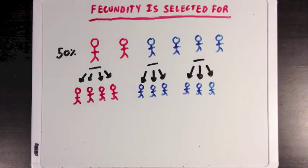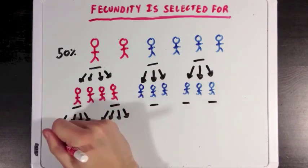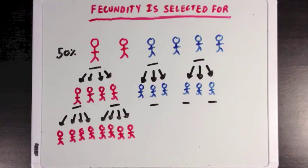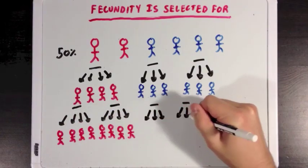So by our second generation, we have four red people and six blue people. Two of our red people, 50%, will survive, and three of the blue people, also 50%, will survive as well. But once again, the surviving red people will each have four offspring, while the surviving blue people will only have three offspring each.